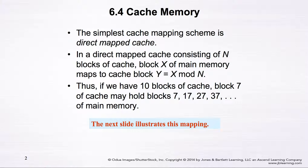The simplest cache mapping scheme is called the direct map cache. In the direct map cache, there are n blocks of cache — that's the capacity of the cache. Block x of the main memory maps to cache block y, which is computed by performing the modulo operation: y = x mod n. This operation takes the remainder of x divided by n. We'll show through an example how that's performed.